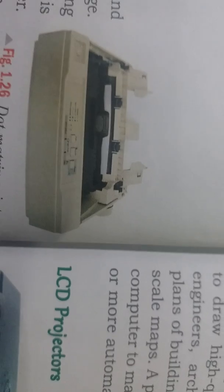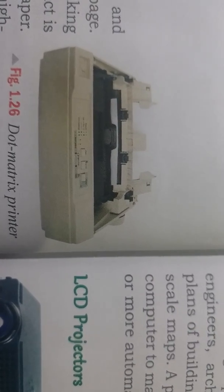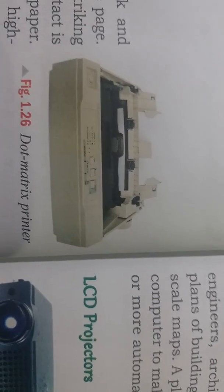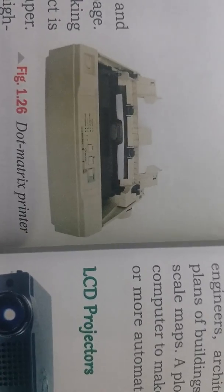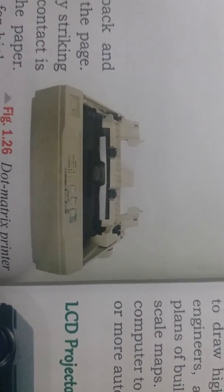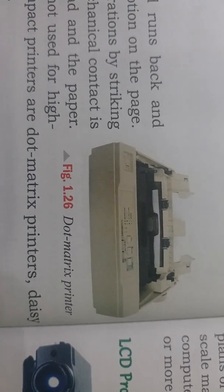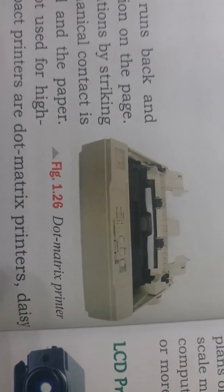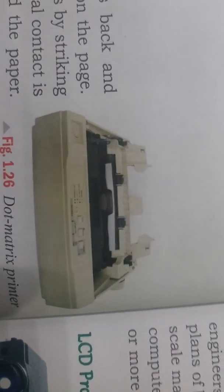Impact printers are those printers which have mechanical contact between the print head and the paper. Examples of impact printers are dot matrix printer, line printer, and daisy wheel printer. In these printers, there is an inked ribbon on which the print head, which has various pins on it, strikes to produce the printout.